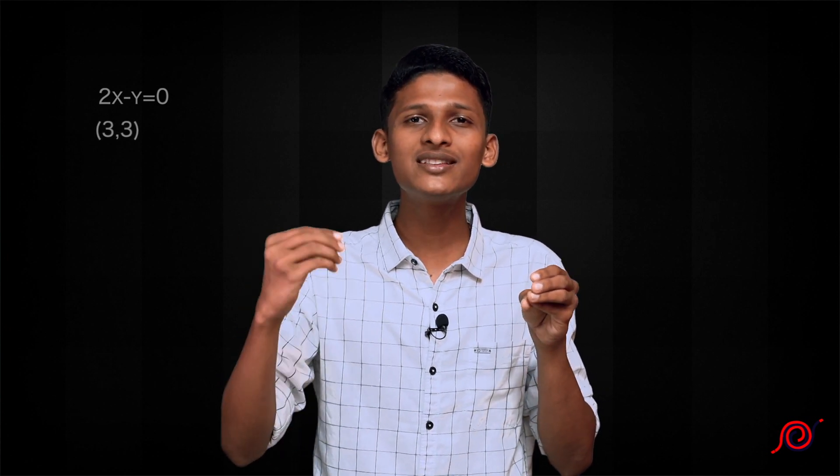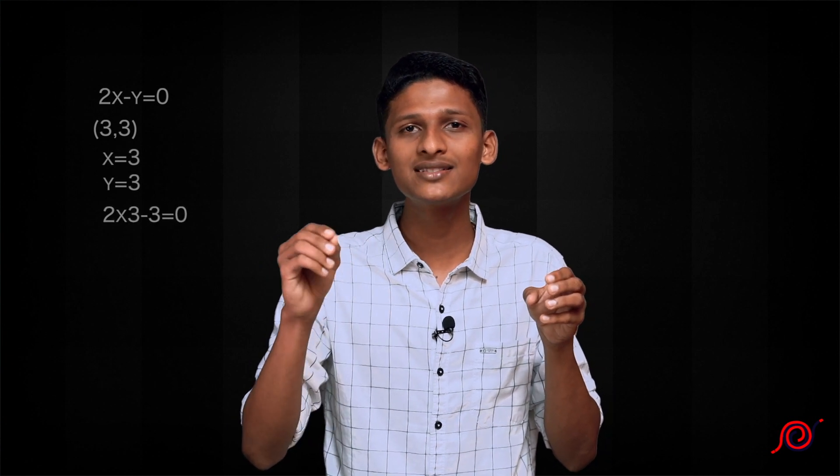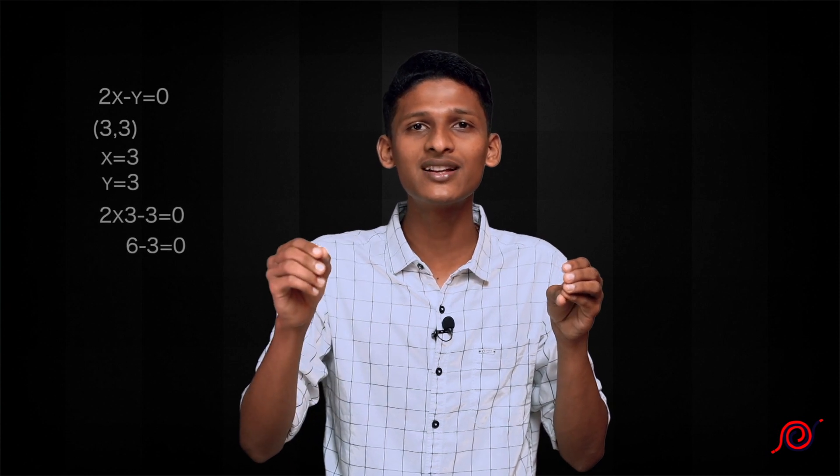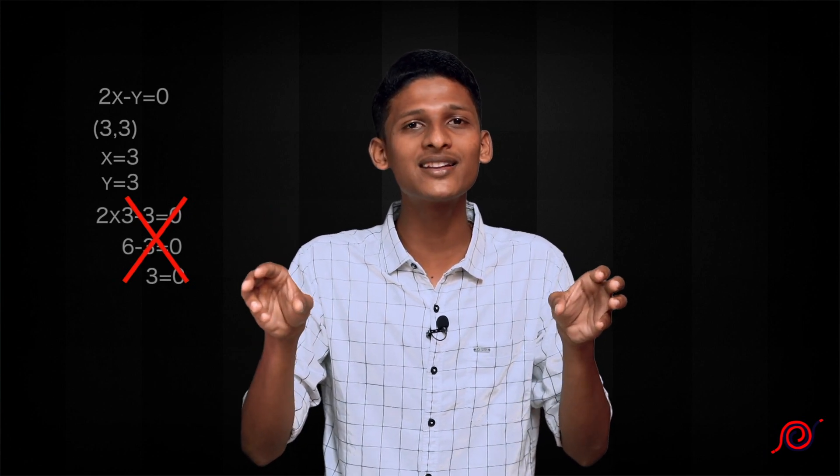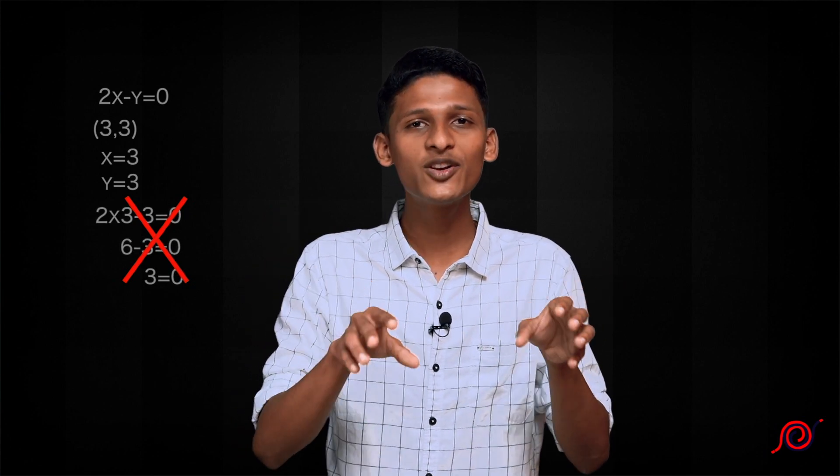We substitute 3, 3 into the equation: x equals 3 and y equals 3. So 2(3) - 3 = 6 - 3 = 3, which is not equal to 0. So 3 is not equal to 0, meaning point 3, 3 does not satisfy any point on this line.